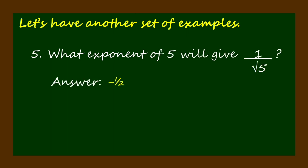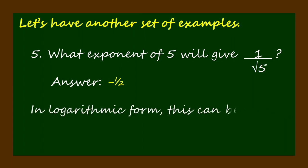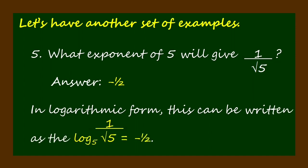What exponent of 5 will give 1 over the square root of 5? Answer: negative 1 half. In logarithmic form, this can be written as the logarithm of 1 over the square root of 5 to the base 5 equals negative 1 half.